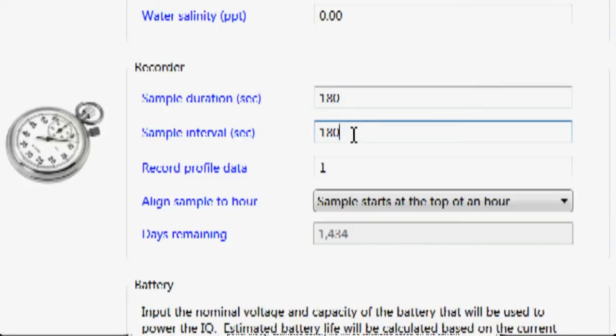But in a more practical case, we would typically set this instrument up to run possibly for three minutes every 15 minutes. In that case, I would set it to 180 for the duration and 900 seconds for the sample interval.